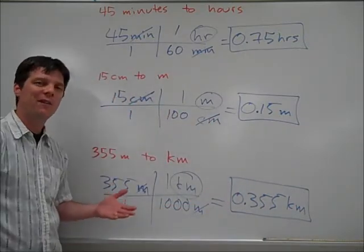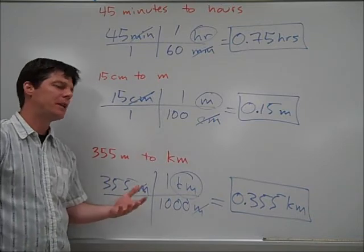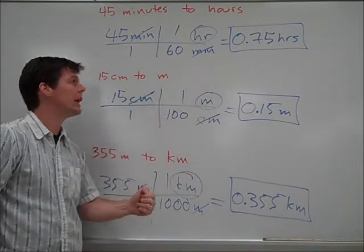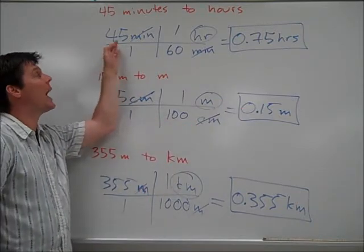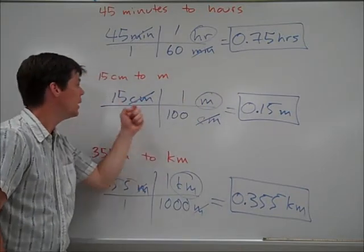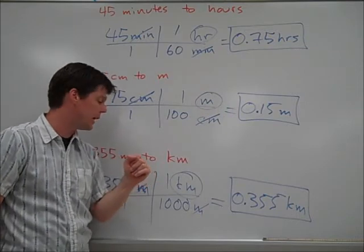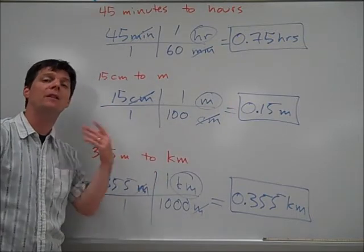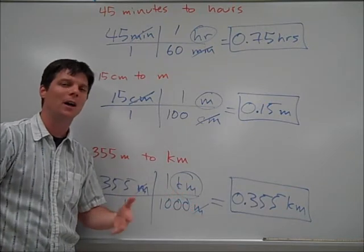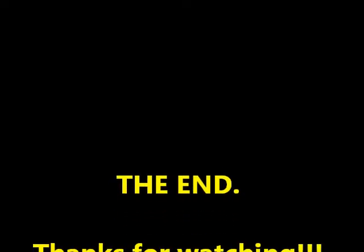One quick note about sig figs. With conversion problems like this, what I always teach my students is to keep the same number of sig figs that you begin with in your final answer. So here we started out with a time measurement that had 2 sig figs. So let's go ahead and report 2 sig figs in our converted value. 15 centimeters, 2 sig figs. Let's report 2 sig figs in our final answer. And 355 meters had 3 sig figs. So we're going to report 3 sig figs with our final answer. Hope you found this helpful, and good luck with all of your conversion problems. Thank you.